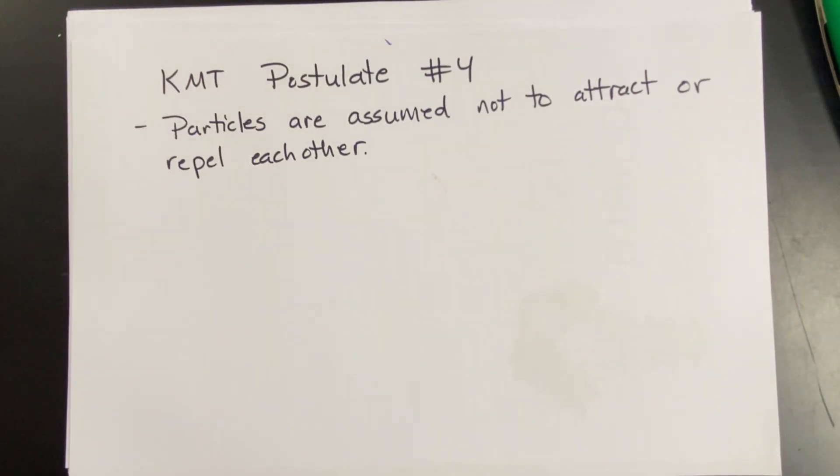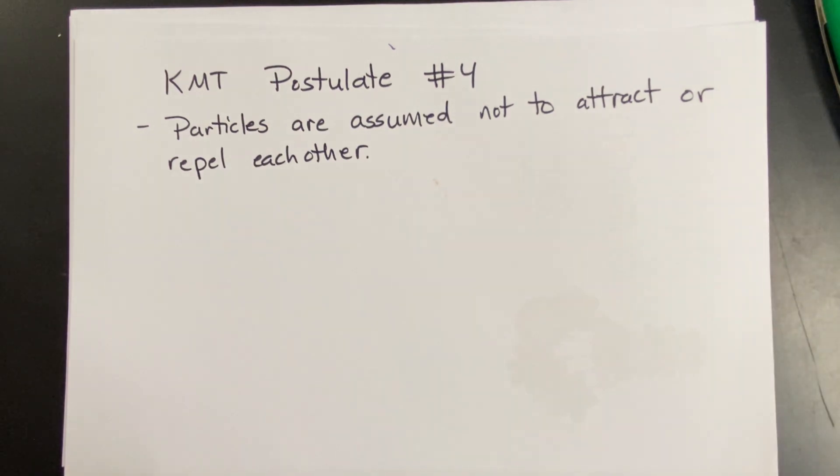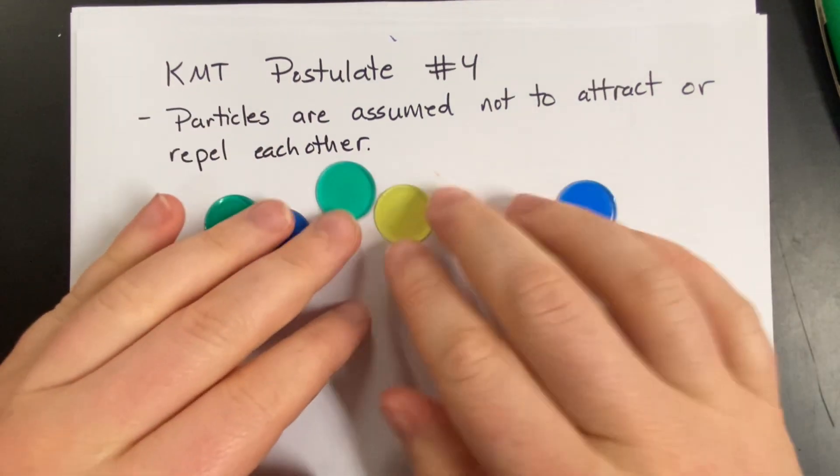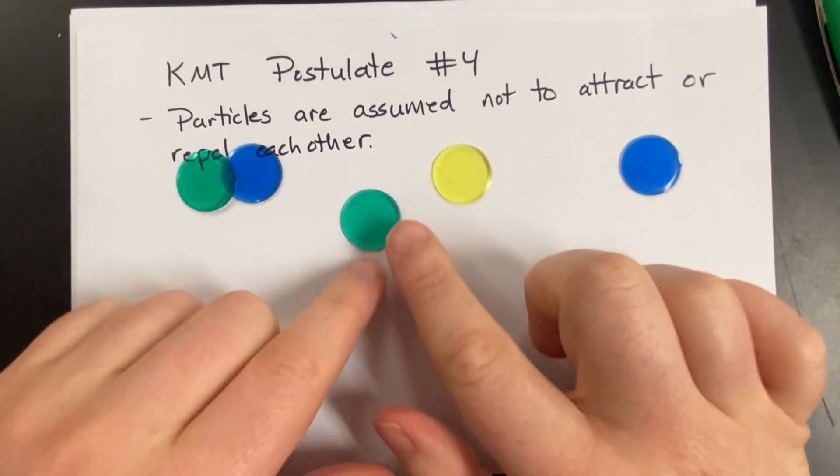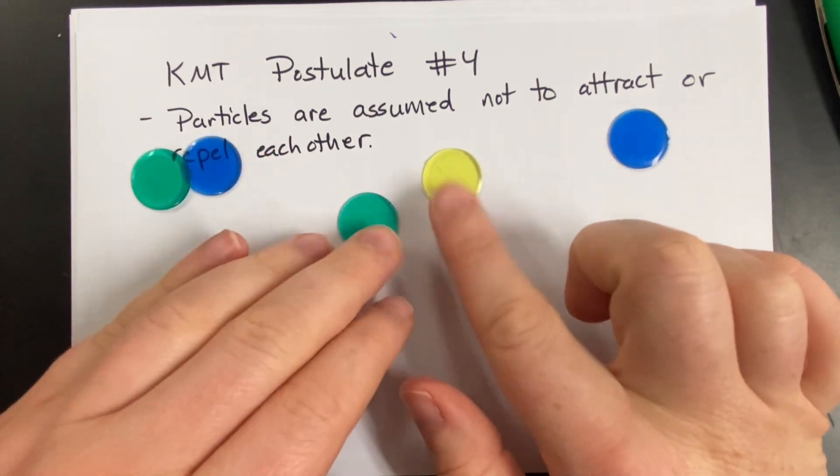Okay. Postulate number four. Oh, nice and short one. Particles are assumed. That's the ideal. If it's ideal, we're assuming it's going to do this. Not to attract or repel each other. What? Okay. You want to think of them as, like, little, hard spheres. So let's say that these are my gas particles. Okay. And they're, like, little solid spheres. I know they're flat. They'd be round, you know, spherical. But these are just little circles. But whatever.